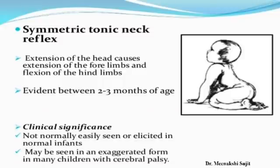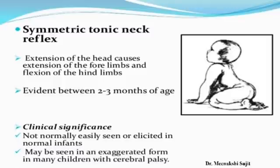The other type is the symmetric tonic neck reflex. In this you can observe neck holding and head movement. It will be evident between 2 to 3 months of age. Usually after 3 to 4 months the baby starts to elevate its head. If you elevate the baby's head, automatically extension of the head causes extension of the forelimbs and flexion of the hindlimbs. This is the normal response of the symmetric tonic neck reflex, and you can also examine forelimb and hindlimb activity.